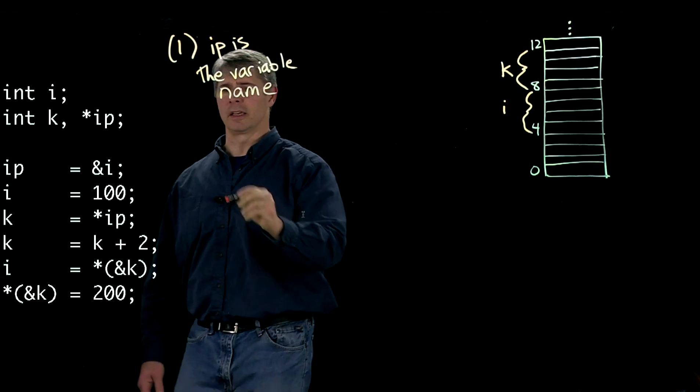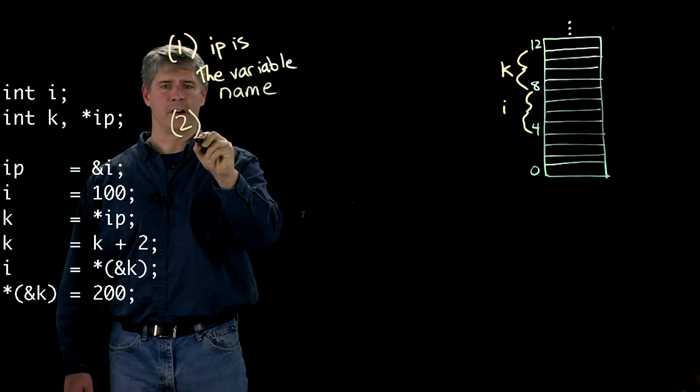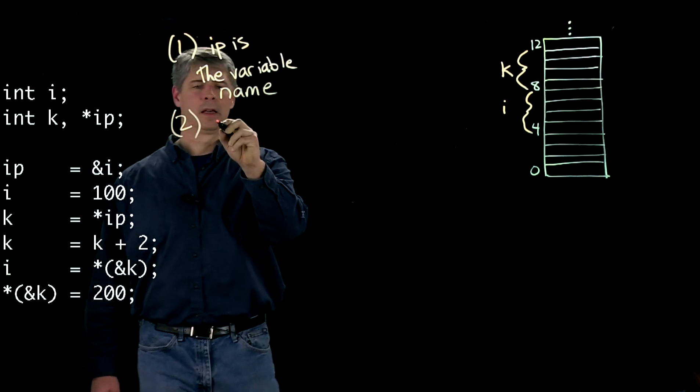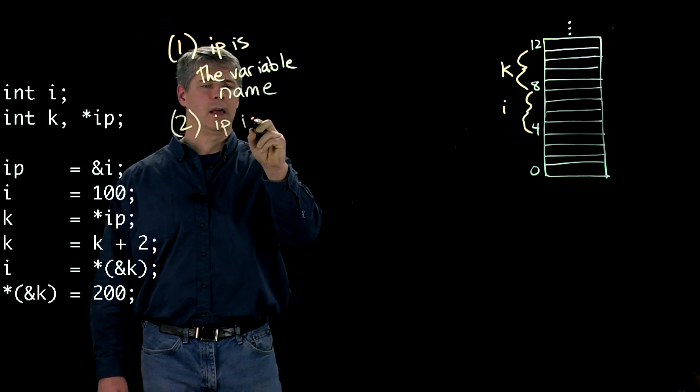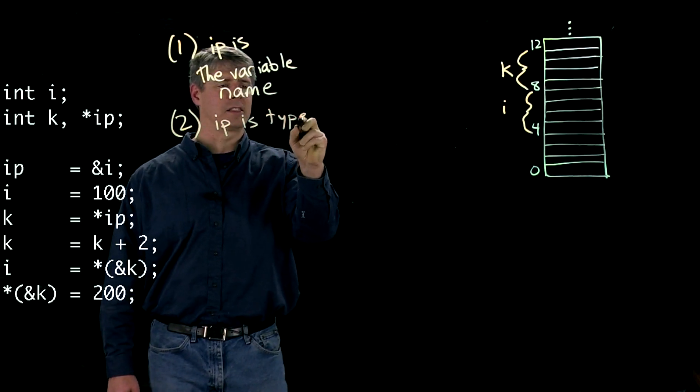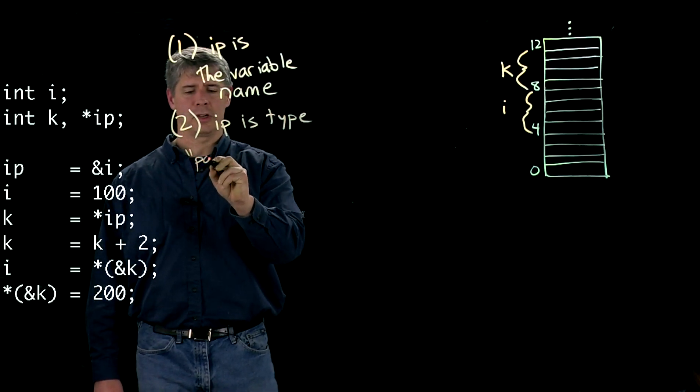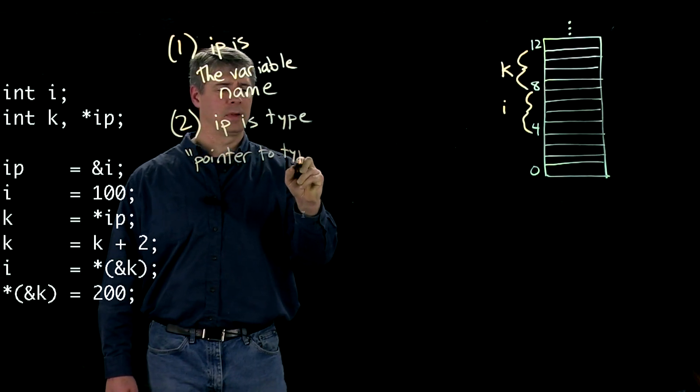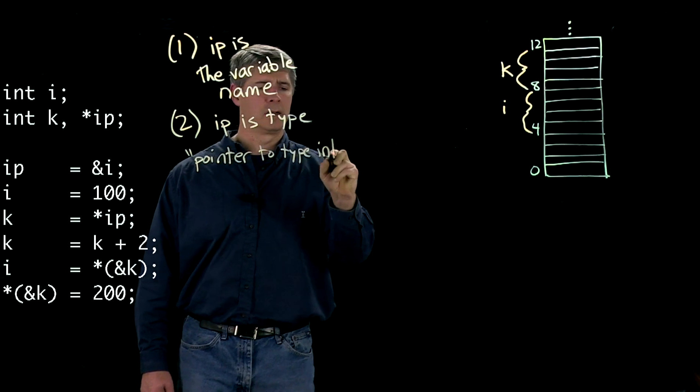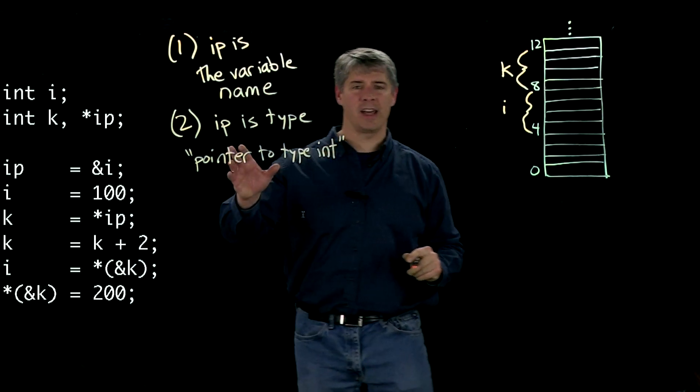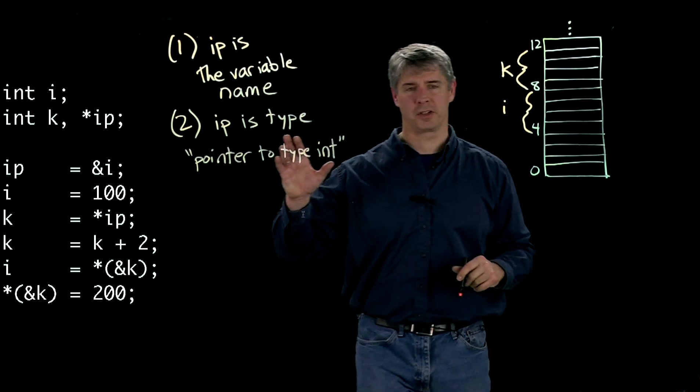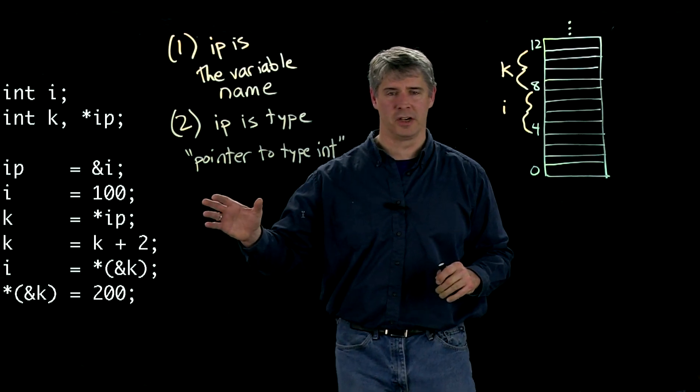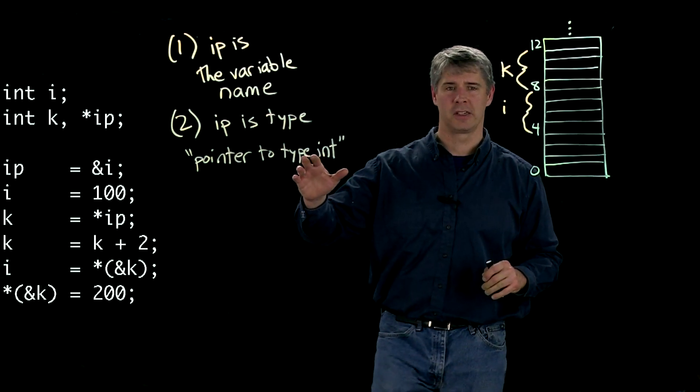And the second thing is that that variable ip has the type pointer to type int. In other words, it holds an address of an integer.